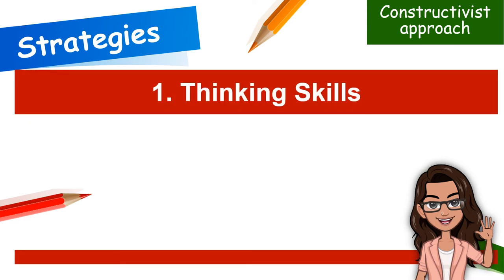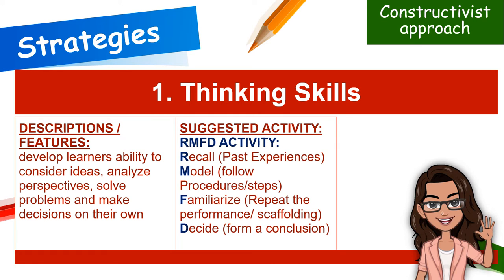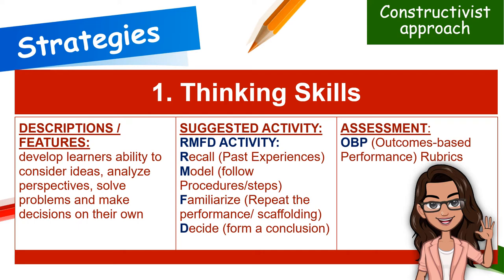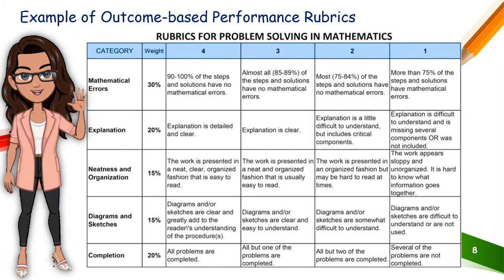The first strategy under the constructivist approach is thinking skills. This strategy strives to improve achievement by consciously developing learners' ability to consider ideas, analyze perspectives, solve problems, and make decisions on their own. The suggested activity is the RMFD activity: Recall the past experiences, Model how to follow procedures and steps, Familiarize by repeating the performance or scaffolding, and Decide or form a conclusion. The suggested form of assessment for this strategy is through OBP or outcomes-based performance rubrics, which include the criteria, category, its weight, and performance indicators with corresponding scores.